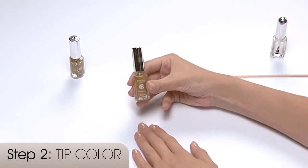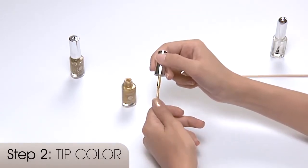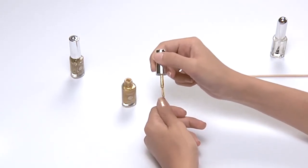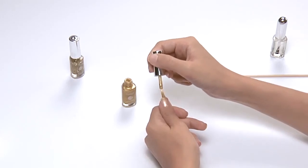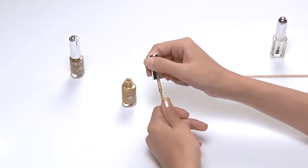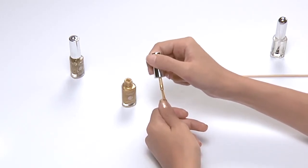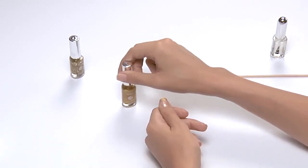Step 2, tip color. Completing one finger at a time, apply one coat of Step 2 polish onto the tip of your nail. Let set for 5 seconds, not allowing this step to dry completely.